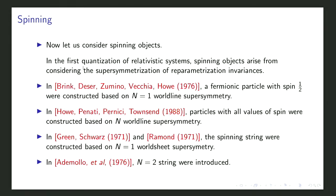This was generalized in 1988 to all values of spin by constructing N worldline supersymmetries: you add more fermionic variables ψᵢ where i runs from 1 to N. One can check that this algebra is the N-extended worldline supersymmetry.